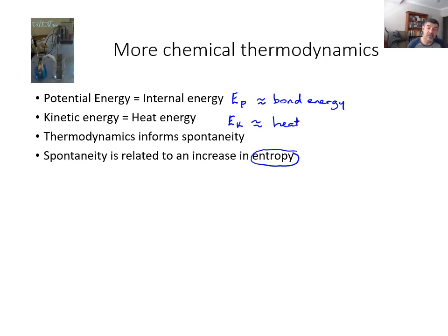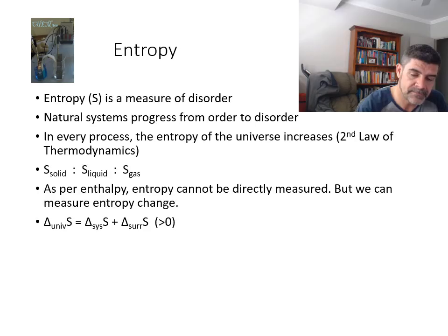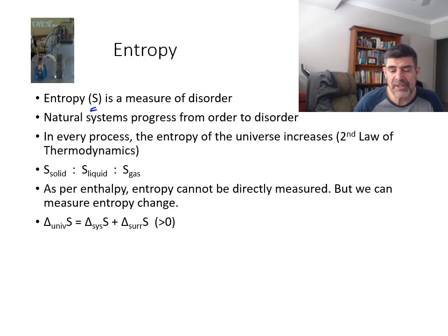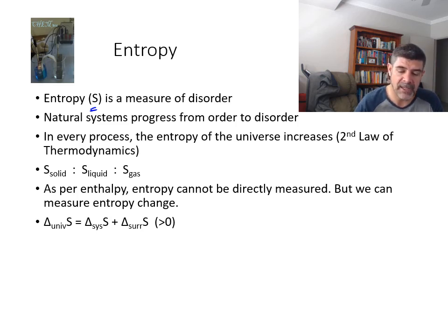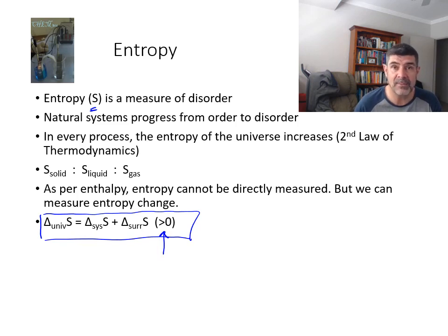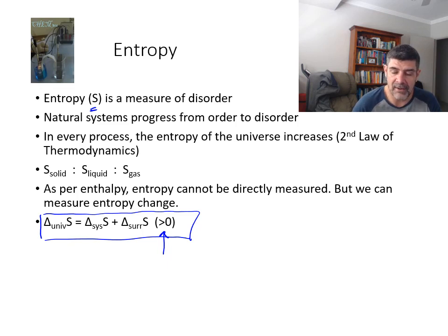Let's spend a moment looking at the concept of entropy. Entropy, which has the symbol capital S, is a measure of the disorder or disorganisation in systems. Natural systems progress from order to disorder, and we know that in terms of the universe, the universe is always going to become more disordered. As systems change, the order in the universe becomes less — we get more randomness, more chaotic, as processes are undertaken.